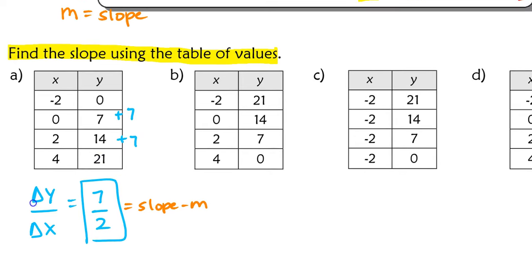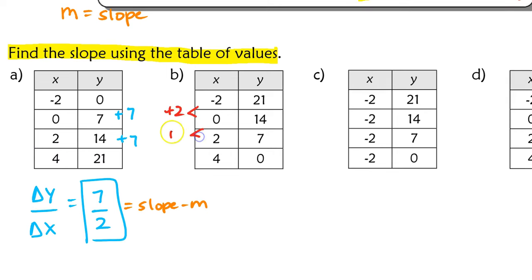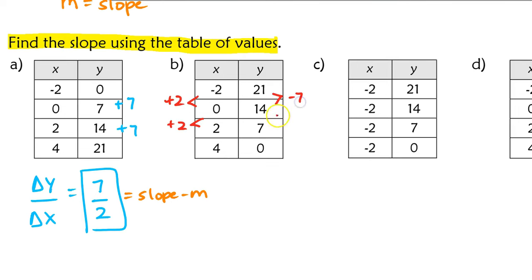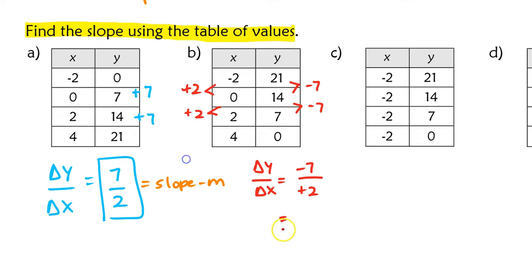In the next example, the x values are all increasing by 2, while the y values are decreasing by 7. So if we find the rate of change — change in y over change in x — the slope is going to be negative 7 over positive 2, which is negative 7 halves.